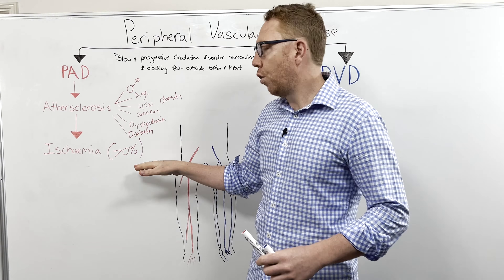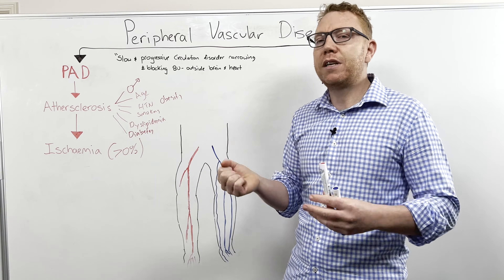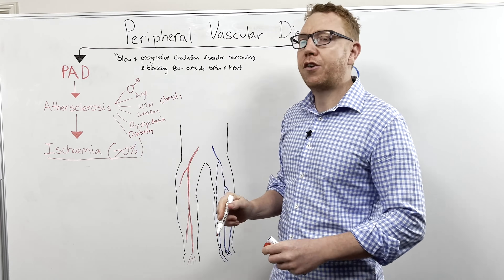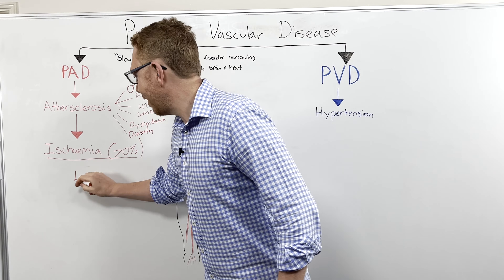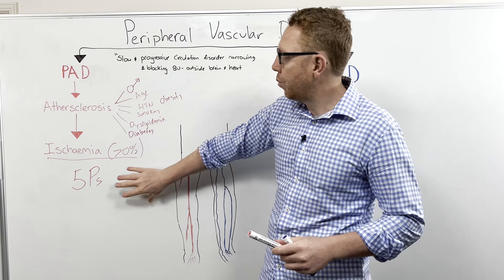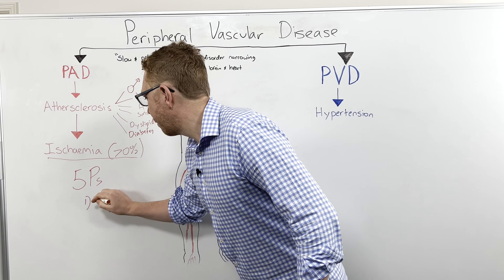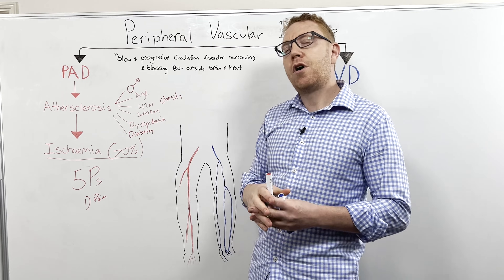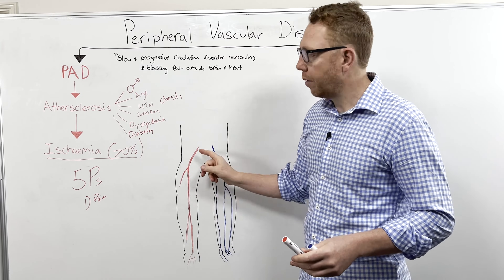Before the blood vessel is occluded by 70%, it's probably preclinical — you won't see any signs or symptoms. But once we get to that degree of ischemia, we see the clinical manifestations. The best way to remember them is what I call the five Ps, which are associated commonly with PAD. The first P is pain — ischemic pain usually brought on by exercise.